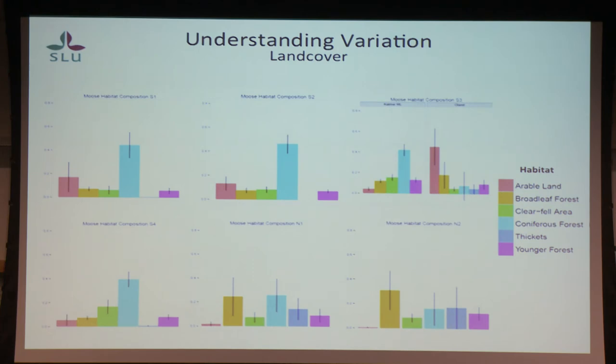If you look at the north — the bottom two in the figure — they have more broadleaf forest in the home range, and also thickets. And this is across the whole year.